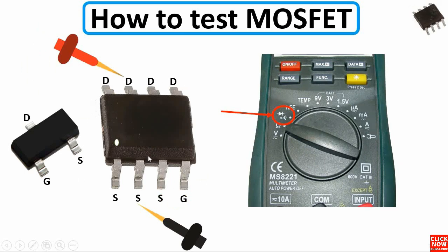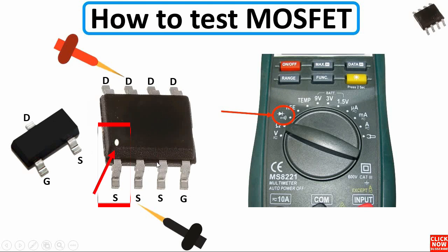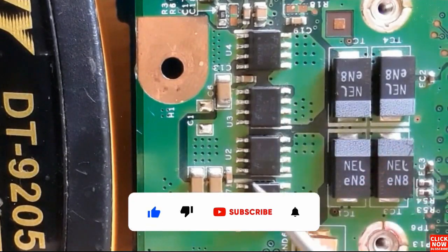The same working principle applies to 8-pin MOSFETs. As you can see here, we have three pins for source and four pins for drain. The first pin is marked with a dot. So three pins for source, one pin for gate, and the other pins are for drain.